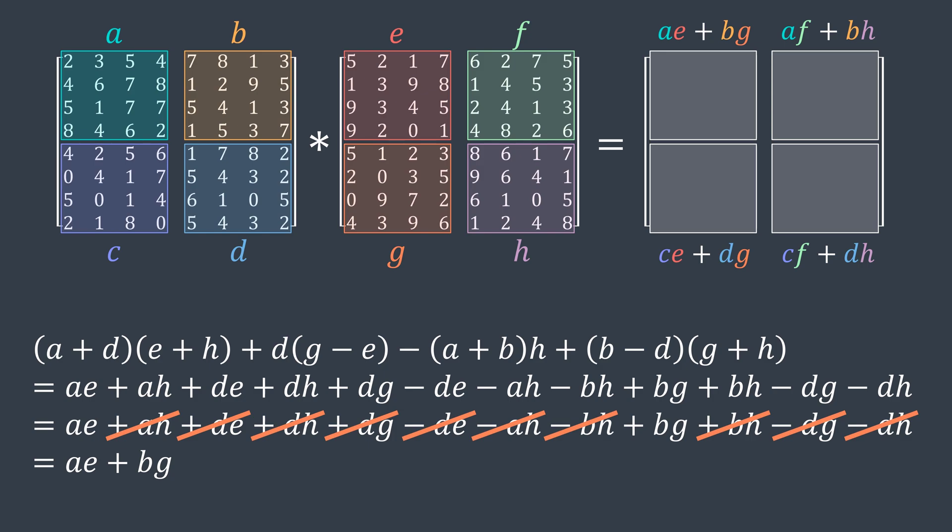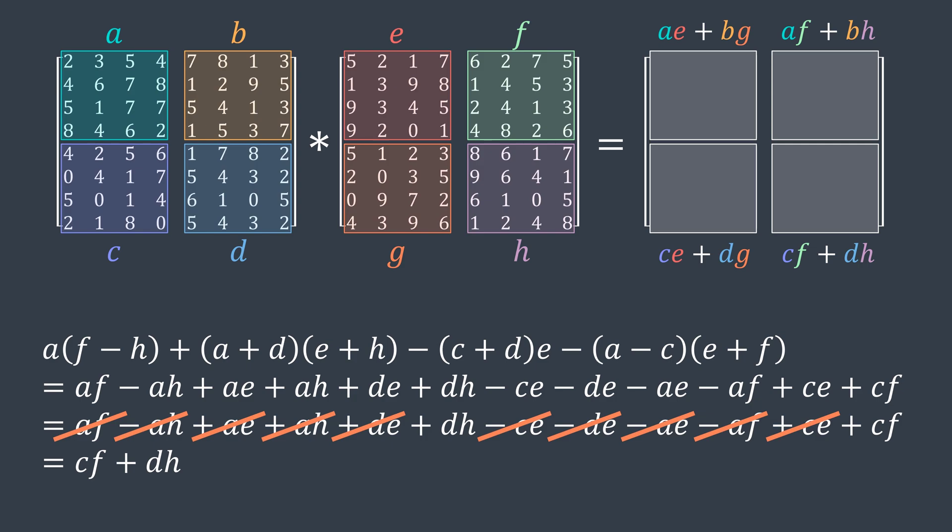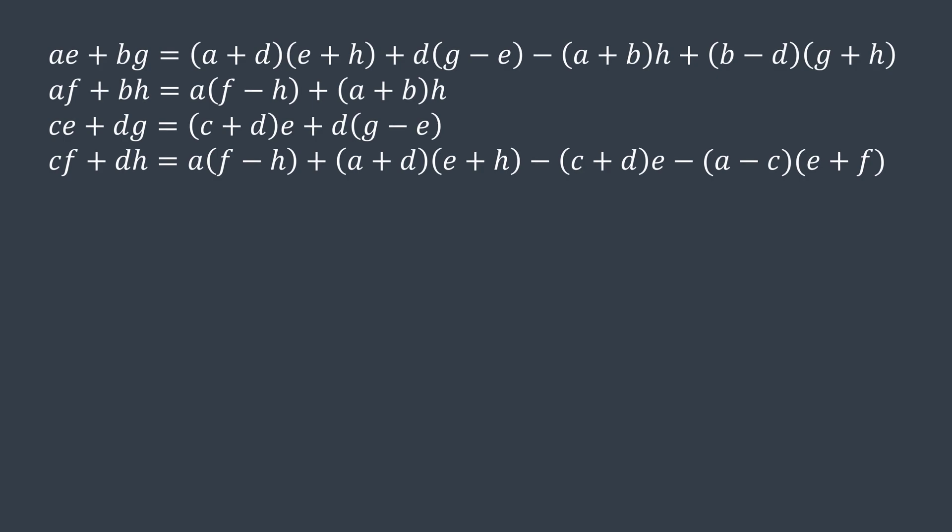We can write af plus bh as a times (f minus h) plus (a plus b) times h. Same thing, if we simplify, we get af plus bh back. ce plus dg can be written as (c plus d) times e plus d times (g minus e). And we can write cf plus dh as a times (f minus h) plus (a plus d) times (e plus h) minus (c plus d) times e minus (a minus c) times (e plus f).